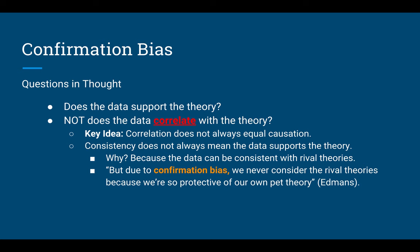What needs to happen when we're looking at data is we need to be asking ourselves: does the data support the theory? Does the evidence we use support the theory that we are making? But oftentimes, because of confirmation bias, we simply ask does the data correlate with the theory. This is what we want to avoid, because correlation does not always equal causation. Just because the evidence correlates doesn't mean that it supports.